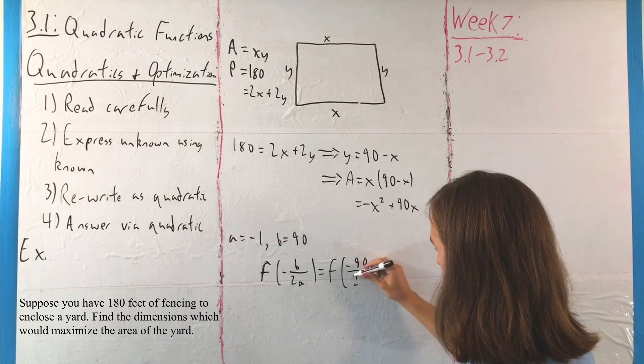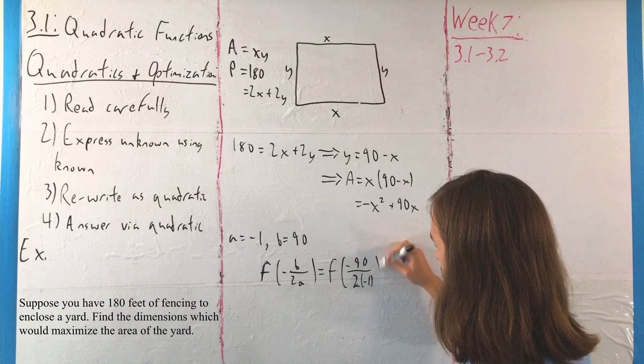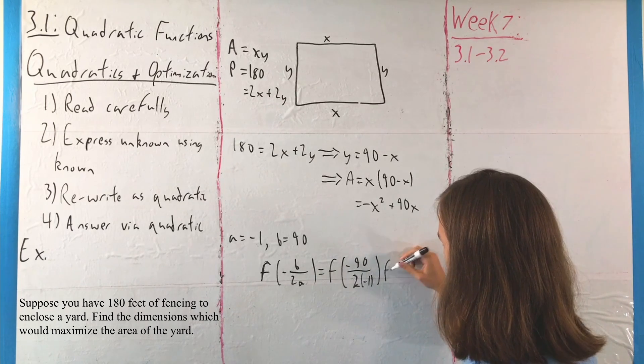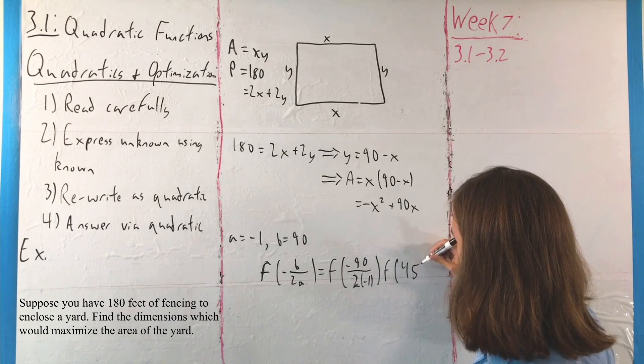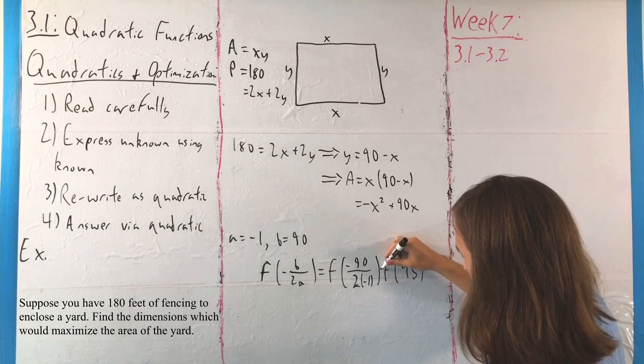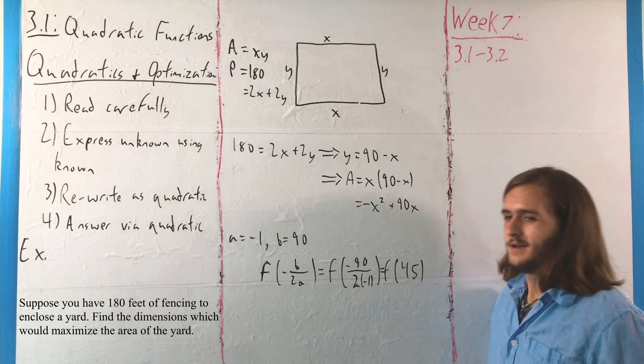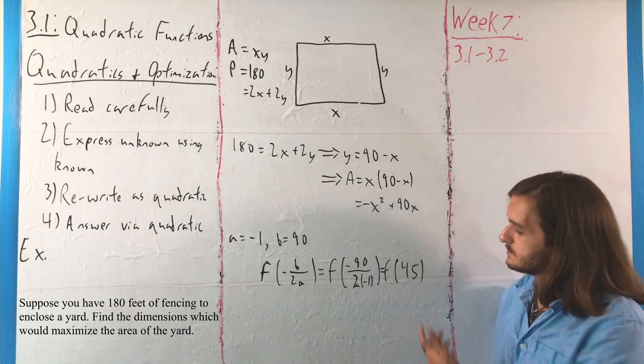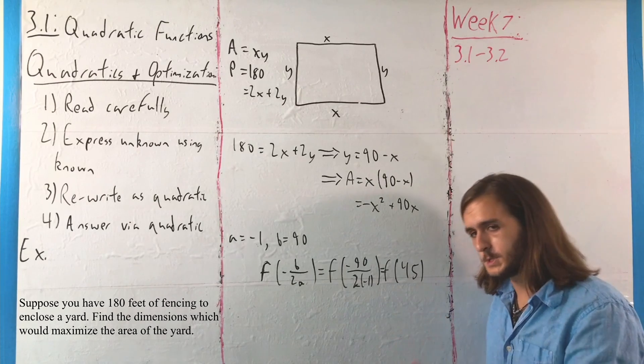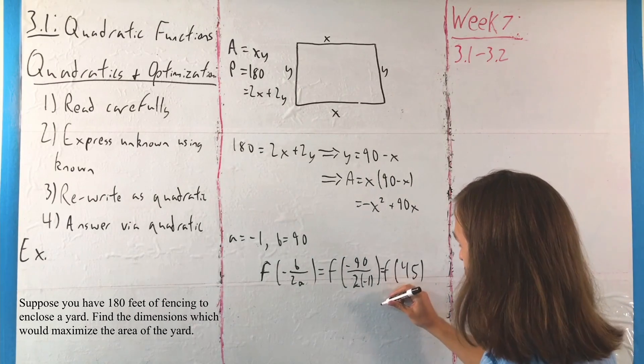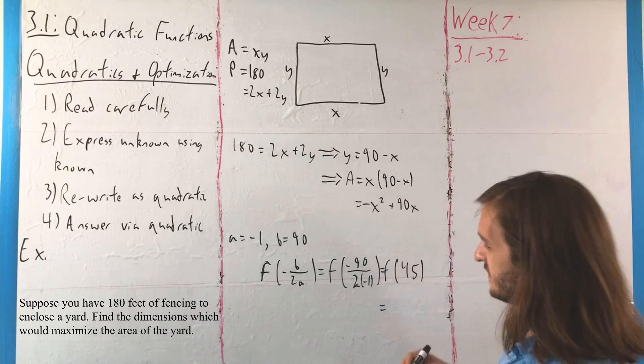And for this, that is going to end up being f of negative 90 over, excuse me, not negative there, I don't want so many negatives, 2 times negative 1, or f of 45.